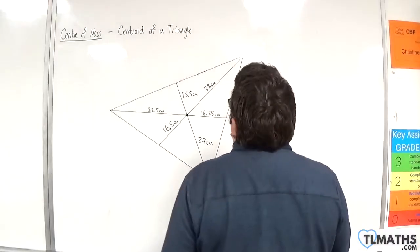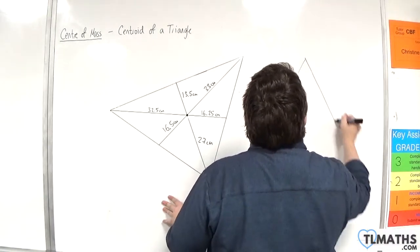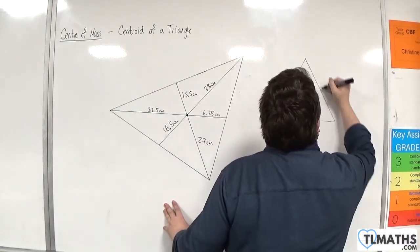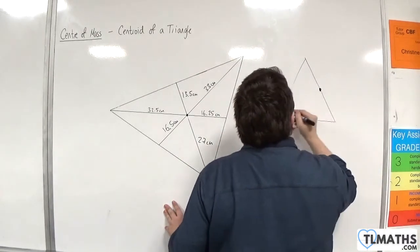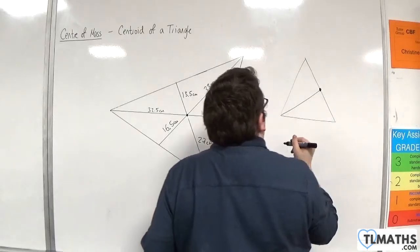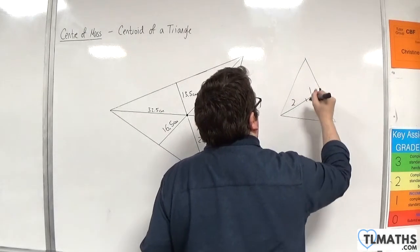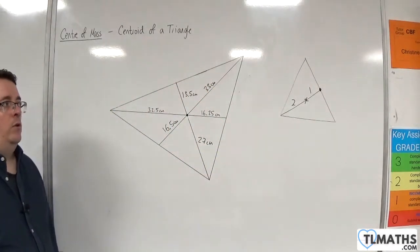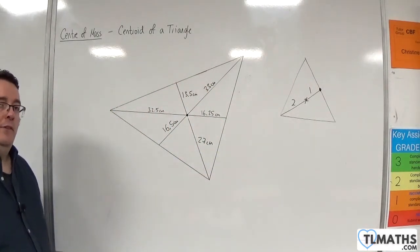So what the centroid does is the center is always two-thirds of the way along the median from the vertex. So if you have your triangle, like so, then you find the midpoint of that side. The median will split it up in the ratio of two to one. And that will be where your center of mass is of the triangle.